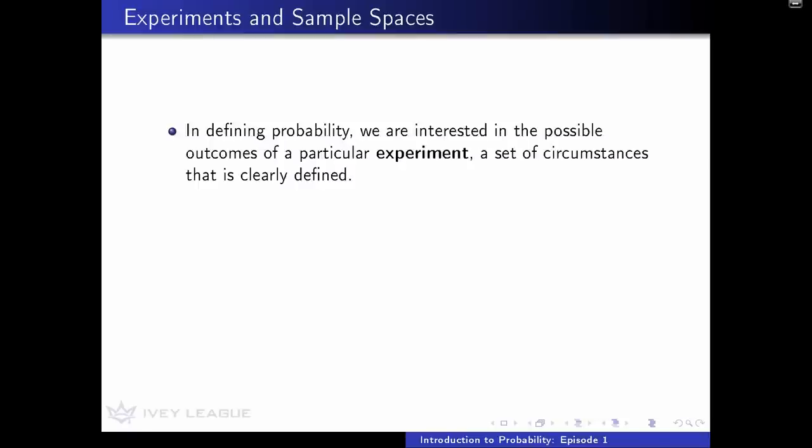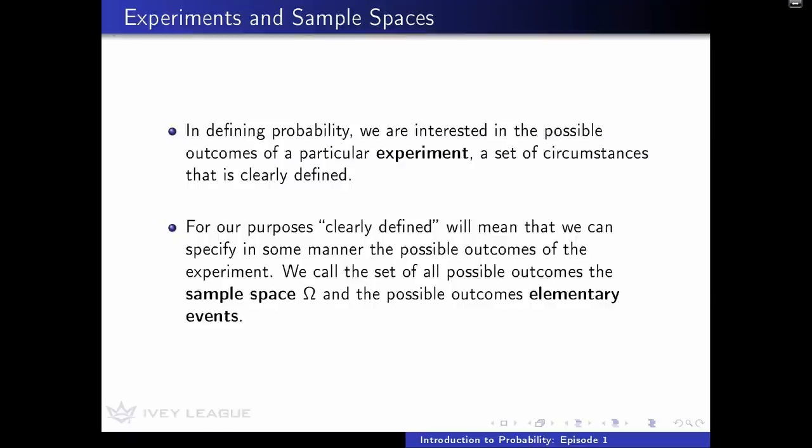When we talk about probability, we have this term that we borrow from statistics: a particular experiment. This comes from statistical design, but it's a good word to describe a controlled situation that we can more or less fully understand, even if we don't know everything about it. For our purposes, by clearly defined experiment we mean that we can specify, either as a list of possible outcomes or as some other mathematical construct, what could happen.